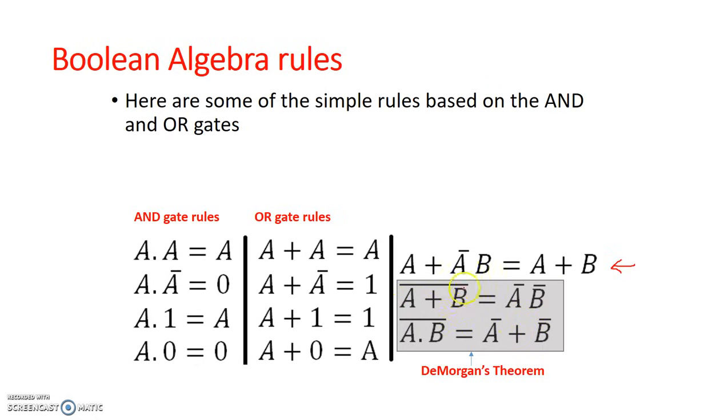It basically says that A or B NOT, so A NOR B, is the same as saying NOT A AND it with NOT B. And this one says, A NAND B is the same as saying NOT A OR NOT B. Our goal in this exercise is not to prove these rules, but to use these rules to simplify some expressions. Let's do a couple of examples.